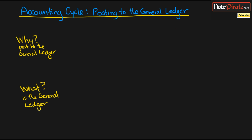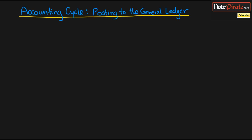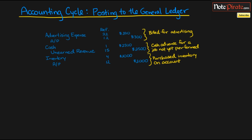Let's look at some transactions and understand how to post them and prepare a general ledger. I've listed three transactions here. The first is billing for advertising. The second is receiving cash in advance for a job that has not been performed — maybe we received cash for some legal work we owe to clients but haven't actually performed yet. The third transaction has to do with purchasing inventory on accounts, which is why we use accounts payable.